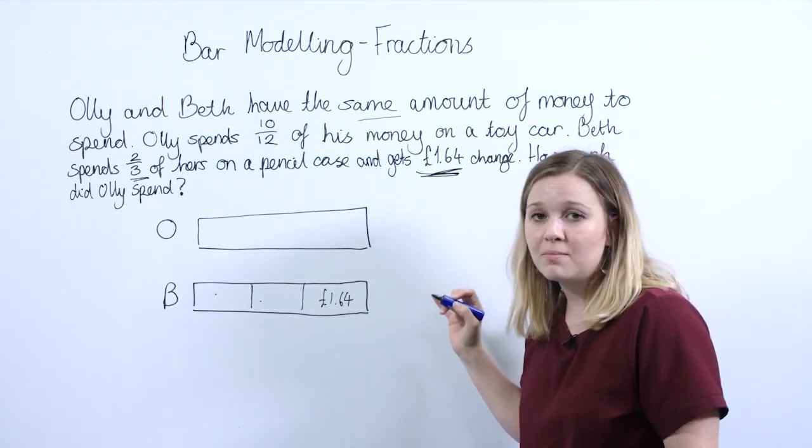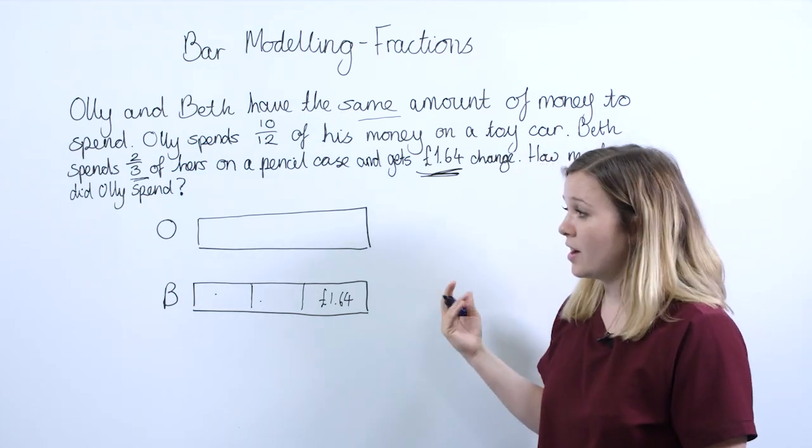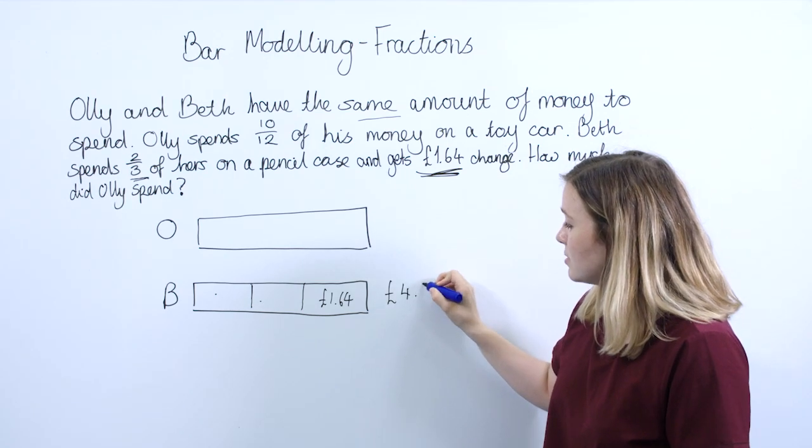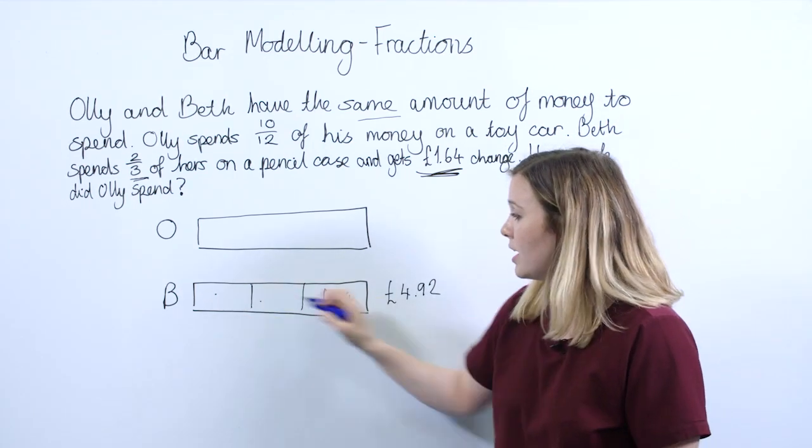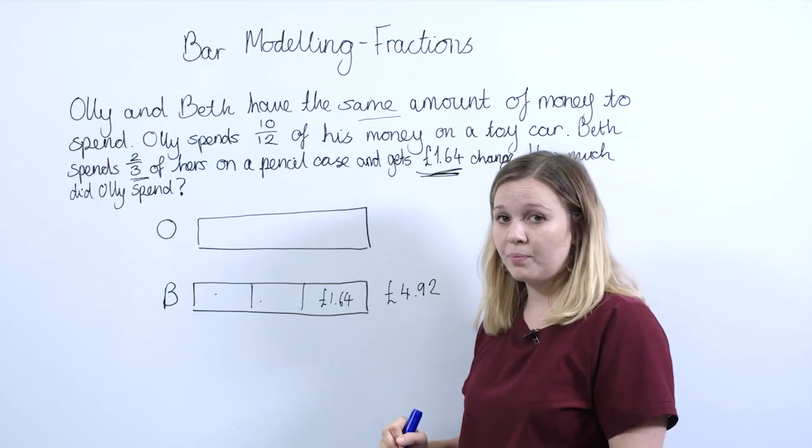So they can do that - they might use a formal written method or mental methods to find the answer - and that would give them a total of £4.92. So this bar here, the whole thing, is £4.92.